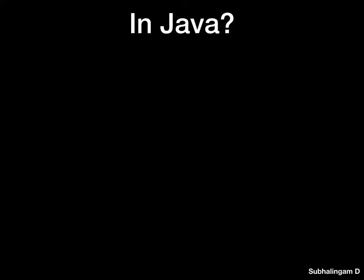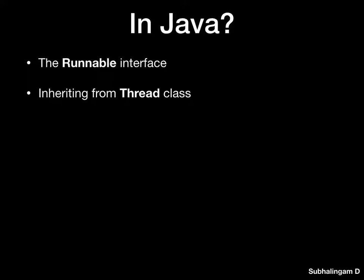Java provides two ways of implementing threads. The first one is using the Runnable interface directly, and the other is by inheriting the Thread class. It is worth mentioning that multiple inheritance is not supported by Java, so the interface is mostly used for implementing threads.